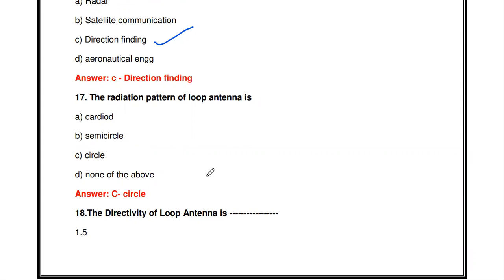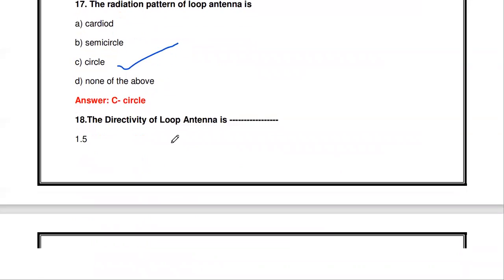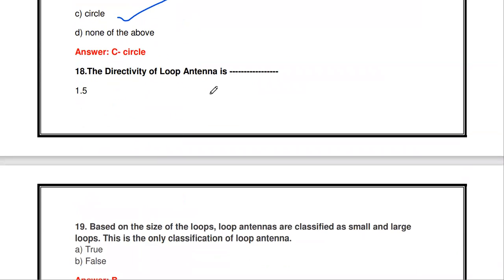The radiation pattern of the loop antenna — what shape is it? The radiation pattern of the loop antenna is circular in nature.